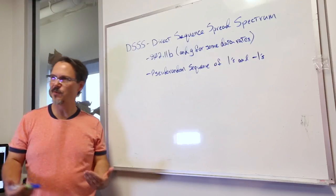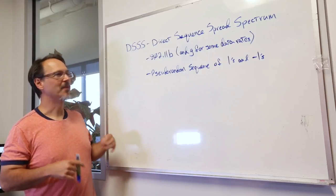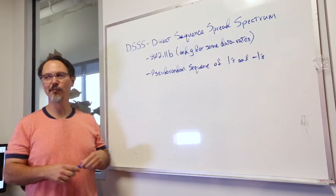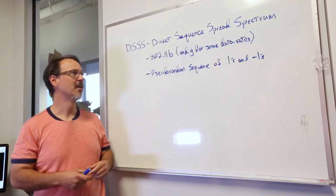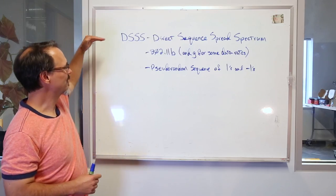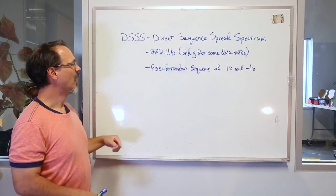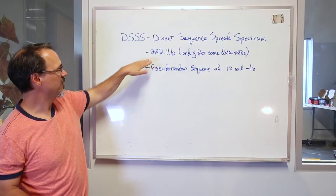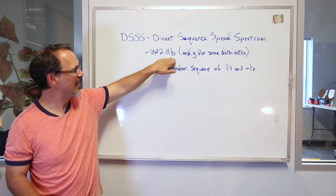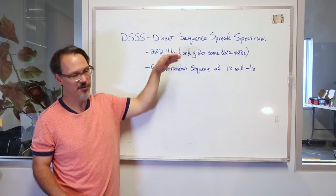Now, speaking of different transmission types, there's some wacky stuff going on here. I'm still wrapping my head around the different techniques that are used. But let's see how we do here. The first is DSSS, or Direct Sequence Spread Spectrum. And that one applies to 802.11 B and G for some data rates.